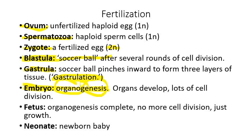After embryogenesis is complete, you have a fetus — organogenesis is complete and cells simply grow and expand. Eventually you have a neonate, which is a newborn baby. The word 'neonate' of course means 'new,' so a neonate is a newborn baby.